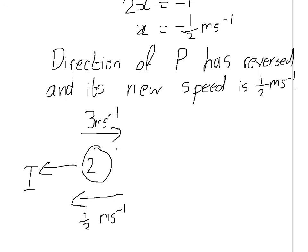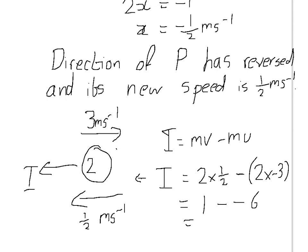And remember from the last video that impulse is equal to mv minus mu. So the momentum after take away the momentum before. Now if we take positive as being in this direction. So it's going to be 2 times a half minus 2 times minus 3. So that's 1 minus minus 6, which is 7 newton seconds.